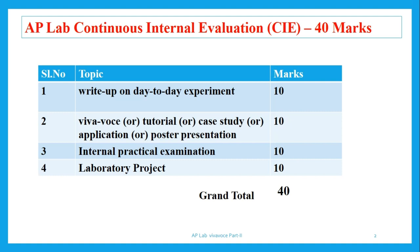For applied physics — and for every subject — this is the same pattern for the lab. 10 marks will be for the write-up on day-to-day experiments, which is mostly related to your record and observation. The next component is viva voce, tutorial, case study, application, or poster presentation — any one of these carries 10 marks, but most probably viva is preferred by faculty members. The third component is the internal practical examination: the script you present after completion of the experiment carries 10 marks.